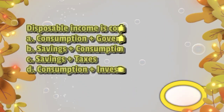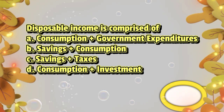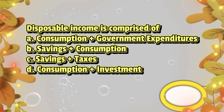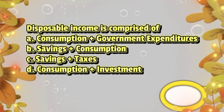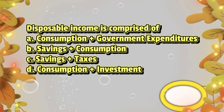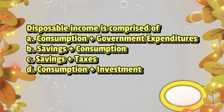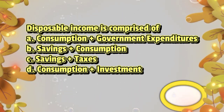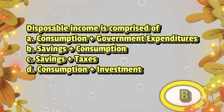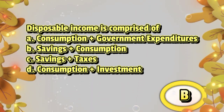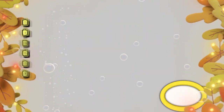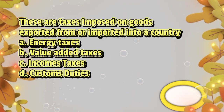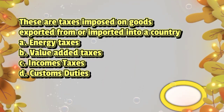Disposable income is comprised of: A. consumption plus government expenditures, B. savings plus consumption, C. savings plus taxes, D. consumption plus investment. The answer is letter B.